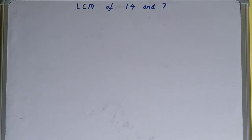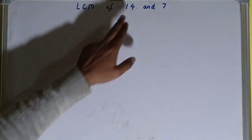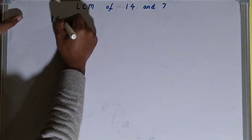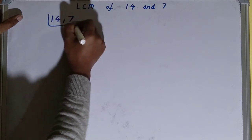Hello friends, and in this video I'll be helping you with the LCM of the numbers 14 and 7. So let's start. To find it out, we need to write both the numbers like this: 14 comma 7.